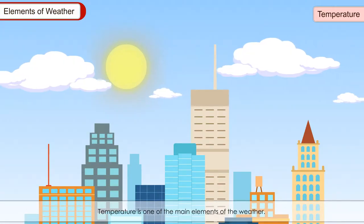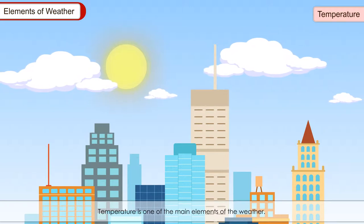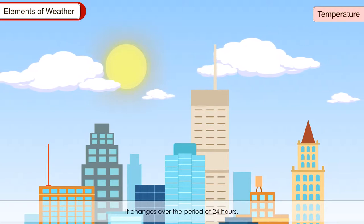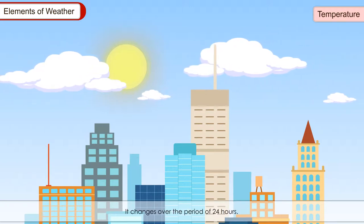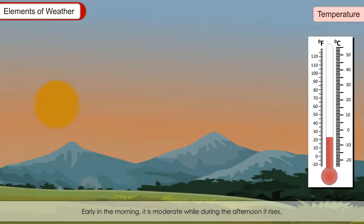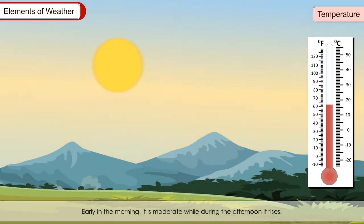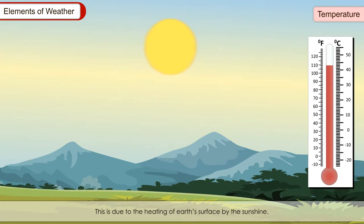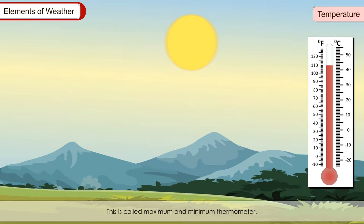Temperature is one of the main elements of the weather. It changes over 24 hours. Early in the morning it is moderate, while during afternoon it rises. This is due to the heating of the Earth's surface by the sunshine. Temperature of a place is measured by a special thermometer called the maximum and minimum thermometer. The unit of temperature is degrees Celsius.